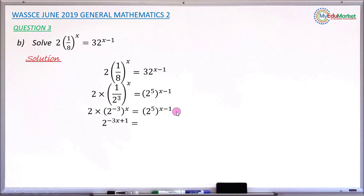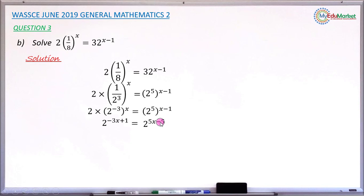On the right-hand side, the bracket 2 raised to 5, raised to the power of x minus 1, means we multiply the two powers. 5 times x gives 5x, and 5 times minus 1 gives minus 5. So the right-hand side becomes 2 raised to the power of 5x minus 5.